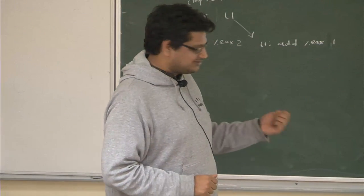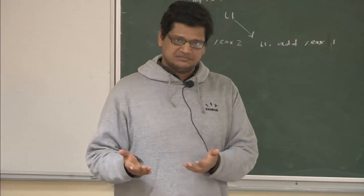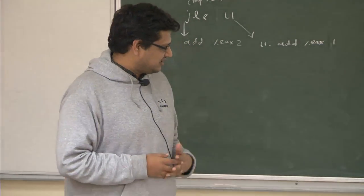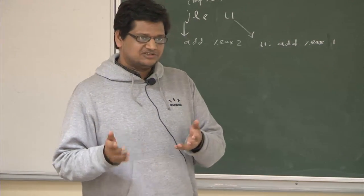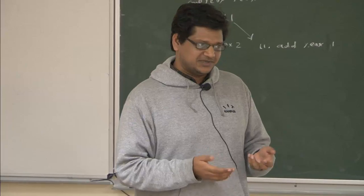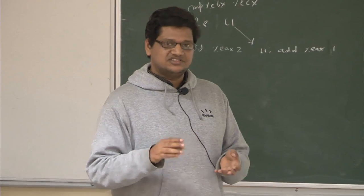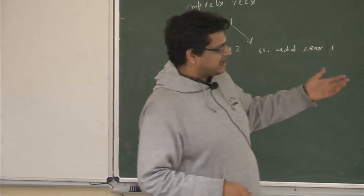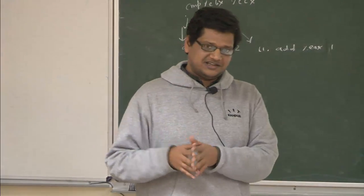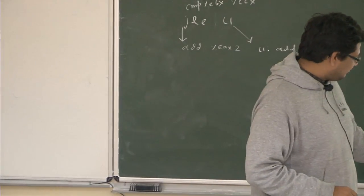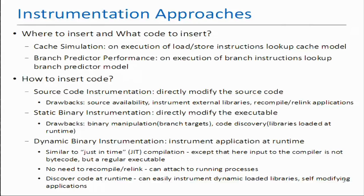Code discovery also becomes much easier with dynamic binary instrumentation. If your application uses dynamically loaded libraries, the library code is also loaded into the address space, and when it is about to be executed, the instrumentation engine can insert code there too — unlike static binary instrumentation, there is no need to explicitly find third-party libraries. This also handles self-modifying applications that modify their own code as they execute.